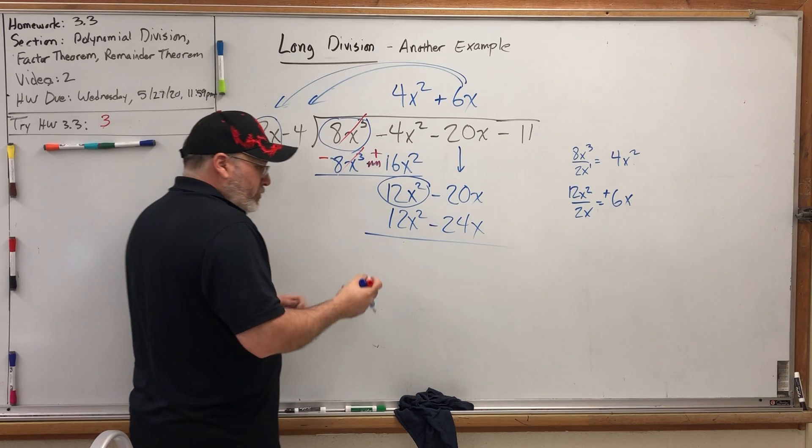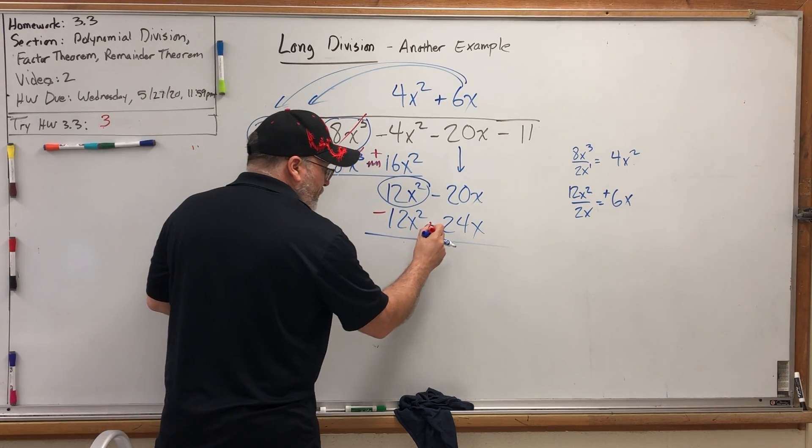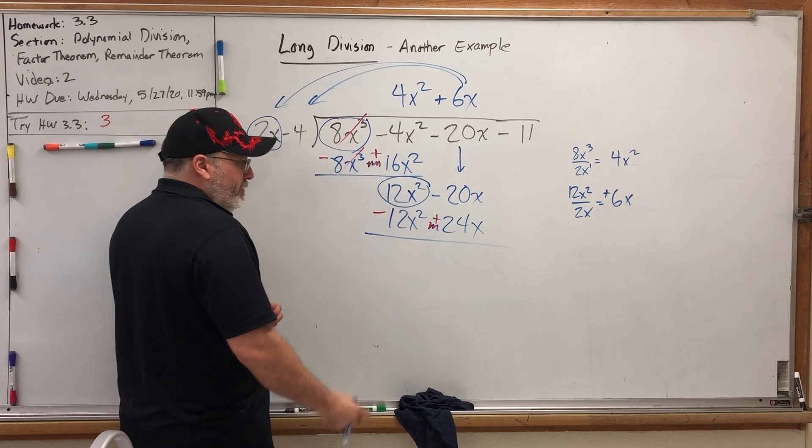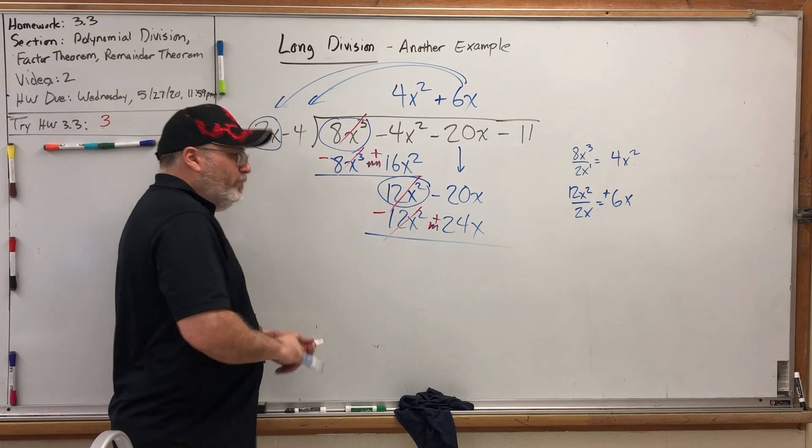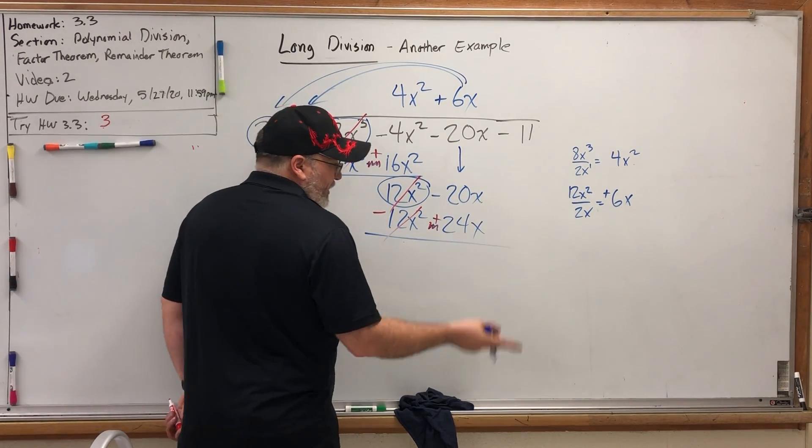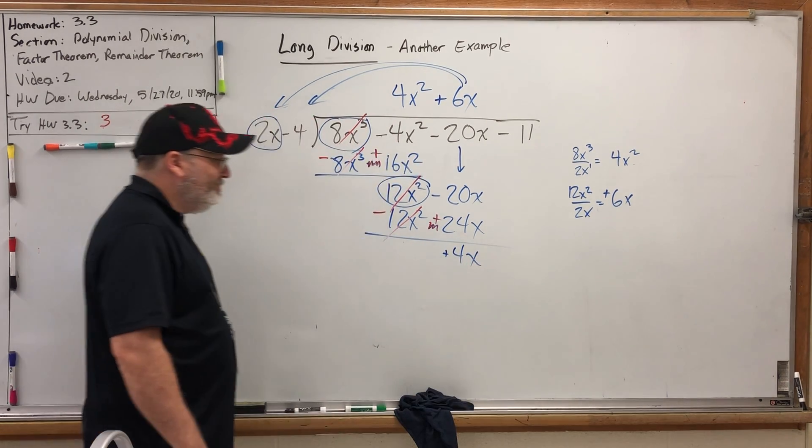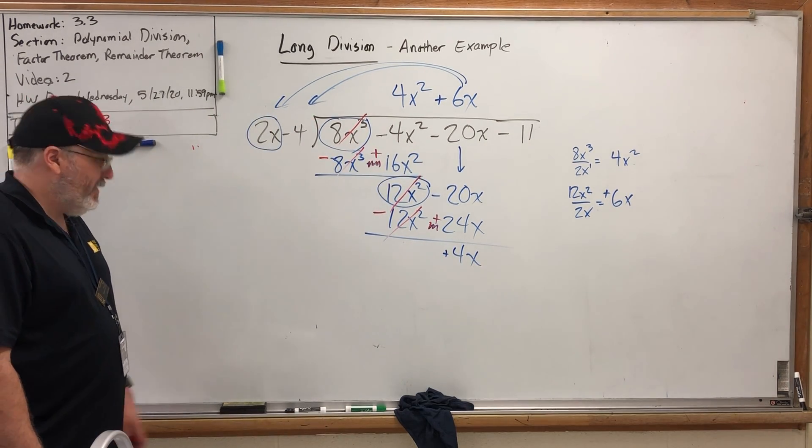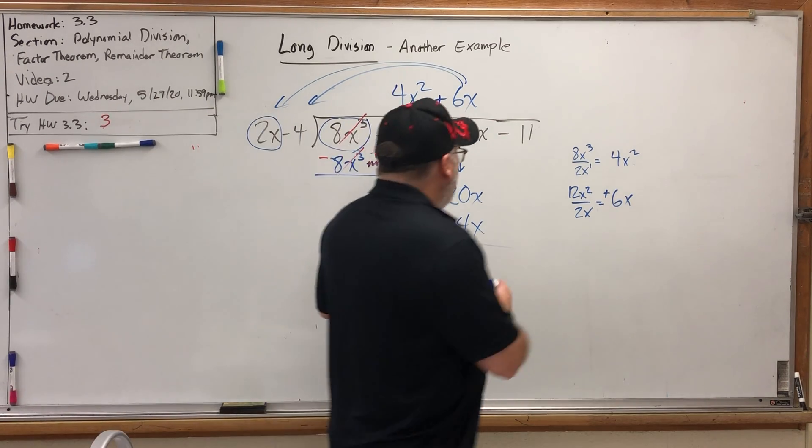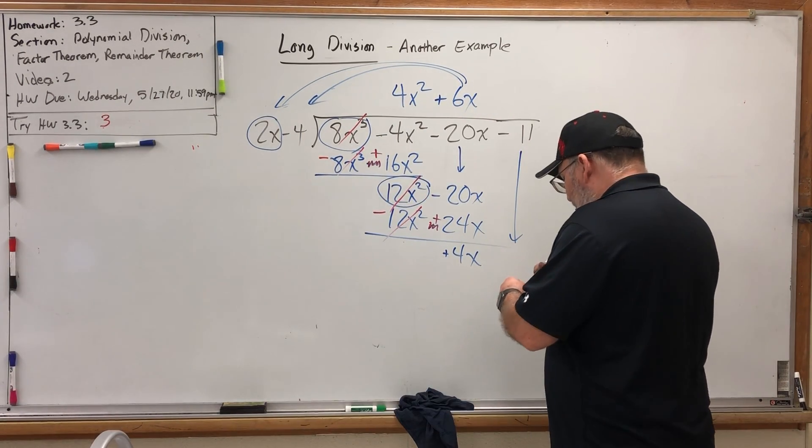And then it's time to change the signs and combine. The 12x² is cancelled. We expected that. -20x and positive 24x is positive 4x. And bring down the next term. When you bring down the last term, you know you're almost done.